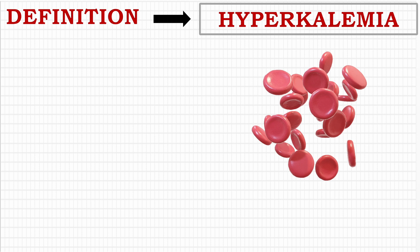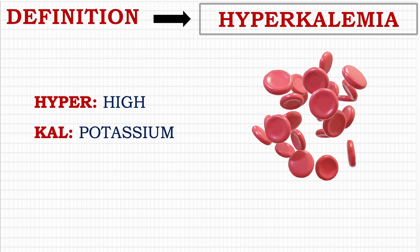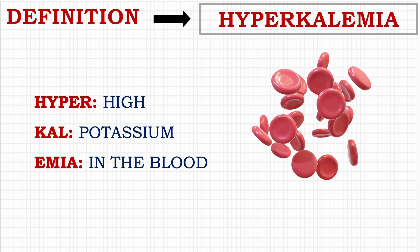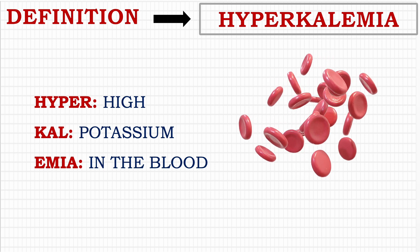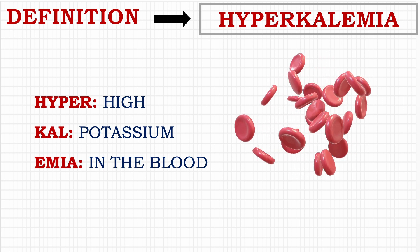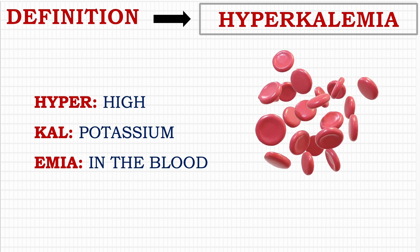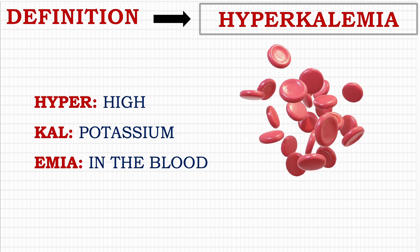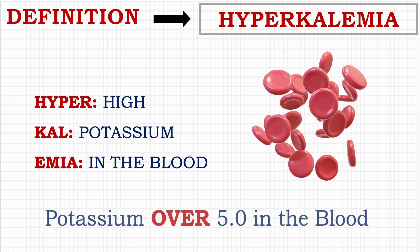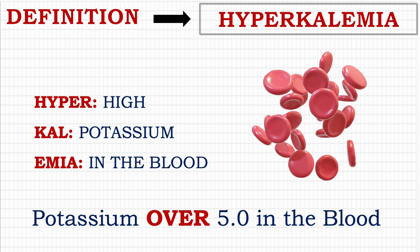In this video we are discussing hyperkalemia — that is, increased potassium level in the blood. In medical terminology, 'hyper' represents increase, 'kal' represents potassium, and 'emia' represents blood. Therefore, hyperkalemia denotes increased potassium level in the blood. The normal level of potassium in blood is 3.5 to 5 millimoles per liter. If it goes above 5 millimoles per liter, we call it hyperkalemia.